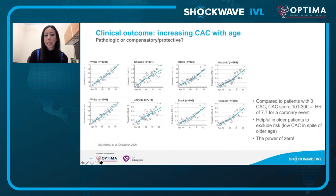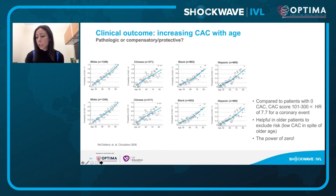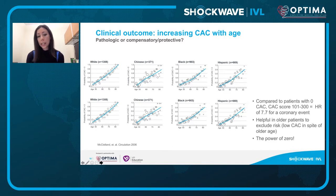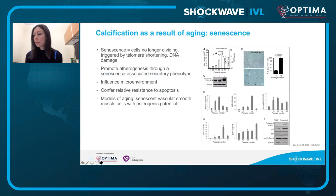There is abundant evidence that increasing vascular calcification occurs with age and implies clinical outcomes for patients. The degree of calcification can predict the likelihood of a coronary event. Importantly, if a patient has no coronary calcium — even in their 80s or 90s — a calcium score of zero is actually a very powerful negative predictor. I want to walk through a few potential mechanisms of vascular calcification, which remains a very underexplored field.